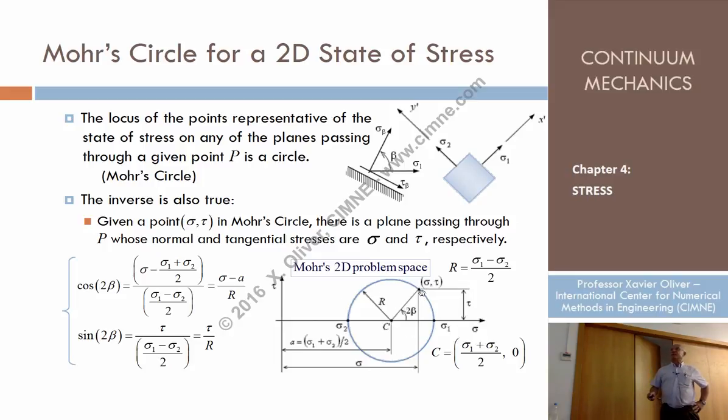If I have one point in the circle, I can determine that angle, and that angle is precisely 2 beta. Because that angle fulfills the equations for beta. That can be proven, as it's proven here, that the point which is the plane, which is represented in the Mohr stress plane by a certain point sigma theta, is characterized by an angle beta with respect to the first principal stress, which is that, 2 beta.